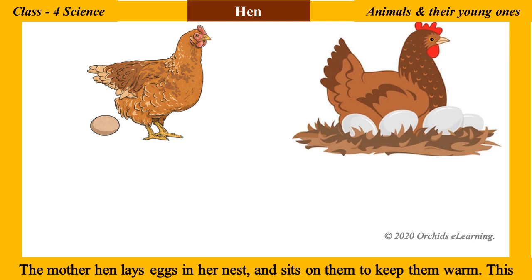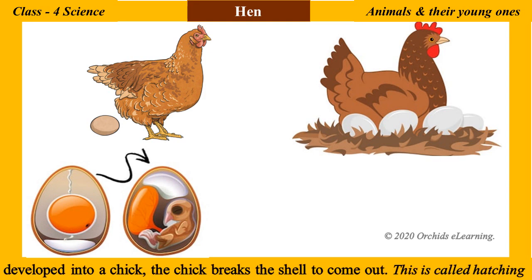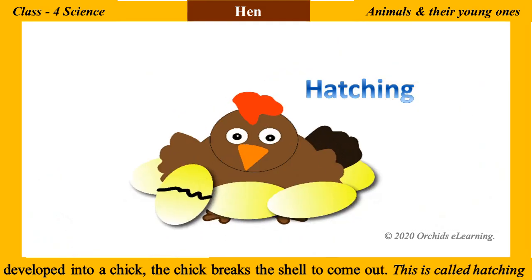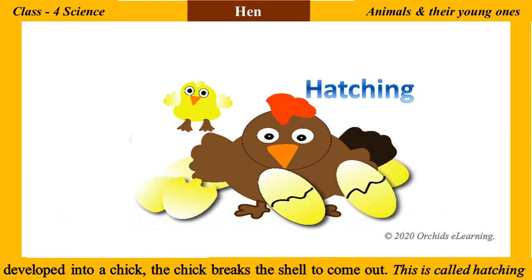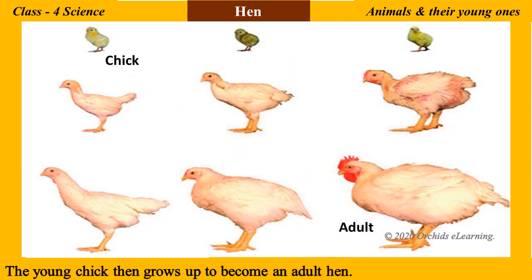The mother hen lays eggs in her nest and sits on them to keep them warm. This helps the embryo to develop better and faster. Once the embryo within the egg has developed into a chick, the chick breaks the shell to come out — this is called hatching. The young chick then grows up to become an adult hen.